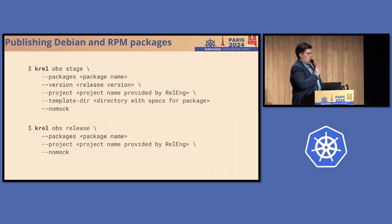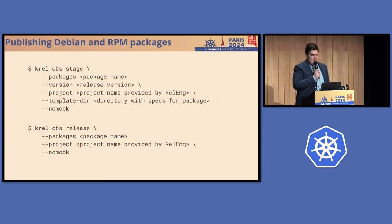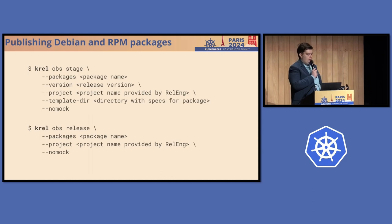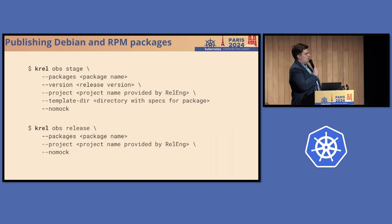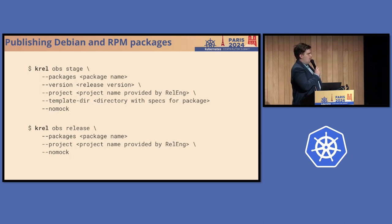You can take spec files from us — the kubectl and kubelet ones are ones I recommend looking at. We build only RPM specs that are automatically converted to Debian specs thanks to awesome tooling in OBS. We don't build binaries from source inside OBS; instead we consume pre-built artifacts, so there's a lot of curl. That's actually the recommended way because it's easier to maintain your pipeline and ensure consistency. To publish packages once you have repositories, you use Krell: run `krell obs stage`, provide the package version, project, and template spec file. That triggers building the package. Then run `krell obs release` with the package name and project name to make it available. You basically don't interact with OBS at all — just use Krell in your CI/CD.